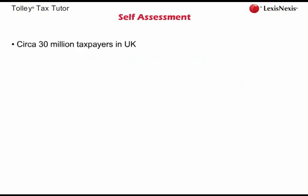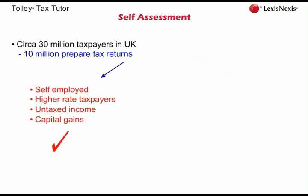Self-assessment is the regime by which HMRC assess and collect direct tax in the UK. In the UK at present, we have around 30 million people who pay tax. Out of those 30 million, around 10 million prepare income tax returns under the self-assessment system. Taxpayers who are self-employed must submit tax returns, as may individuals whose taxable income is above the basic rate threshold and who therefore pay tax at the higher rate. Taxpayers who have untaxed income also have to file tax returns.